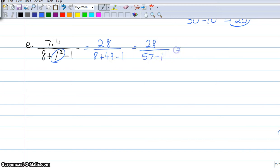57 minus 1 gives me 56. Now I'm going to look and see if I can simplify my fraction. Oh, and I can. It's going to simplify very nicely down to 1 half.